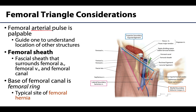The femoral artery, femoral vein, and femoral canal are wrapped together in what is called the femoral sheath, which is quite robust. It extends deep to the inguinal ligament, allowing the femoral vasculature to glide during movements of the hip joint. During dissection, it can be difficult to differentiate the artery from the vein because they are so tightly wrapped together within this sheath.